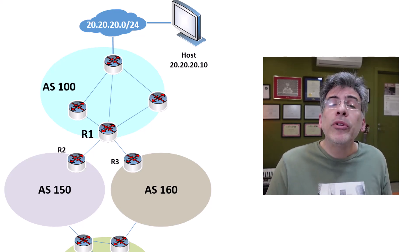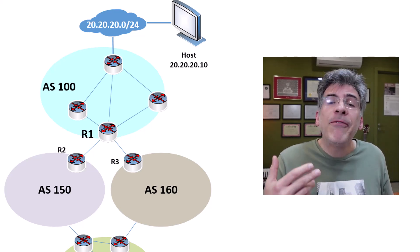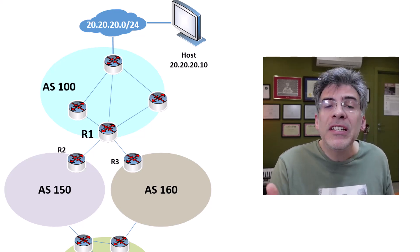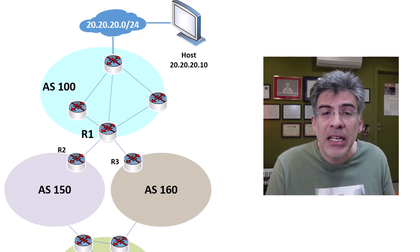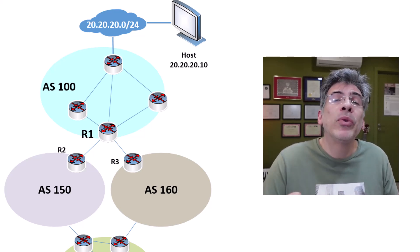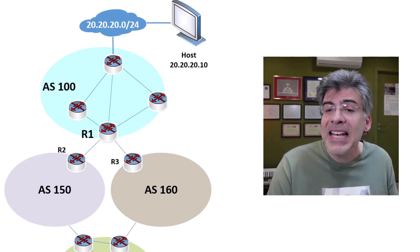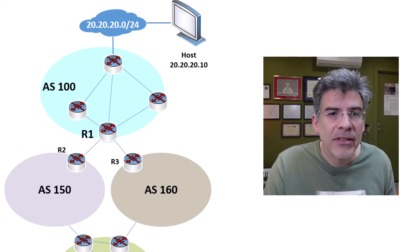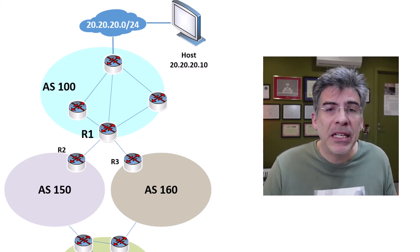So when a router learns about multiple external paths, if all previous attributes are equal, it will choose the oldest path in order to maintain routing stability and to avoid the need for BGP to reconverge if a new path is introduced. Remember, this attribute is only relevant to external paths — that is, paths learned from EBGP peers.